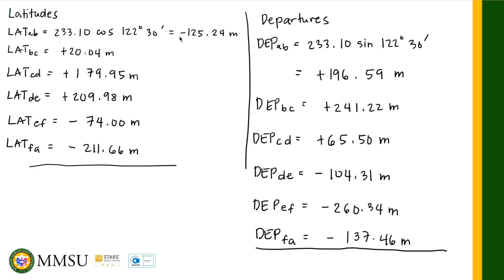We just need to get the sum, taking into consideration the signs: −125.24 + 20.04 + 179.95 + 209.98 − 74.00 − 211.66. The CL, the closure in latitude, equals −0.93 meters.